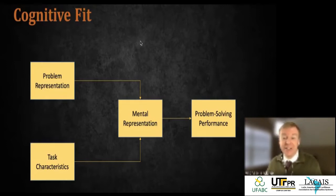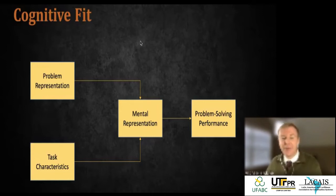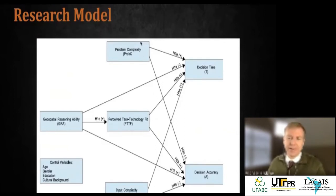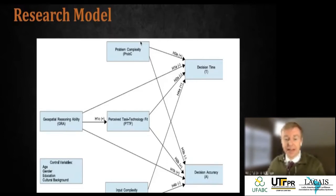Cognitive fit works like this: you have a problem and a representation of that problem, along with task characteristics. You form a mental representation of both the problem and the task to solve it. You want to reduce the workload it takes to arrive at that. The more familiar you are with something, the easier it gets over time. And if the problem is presented in the best matching way, the mental load is also lower — both factors improve problem solving performance.